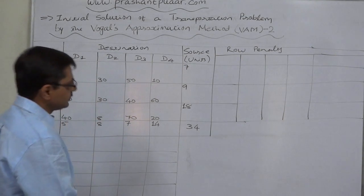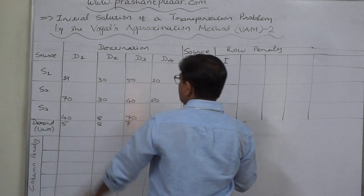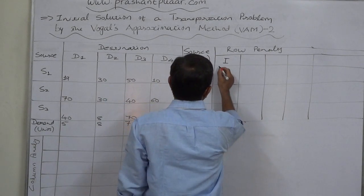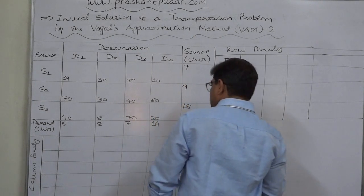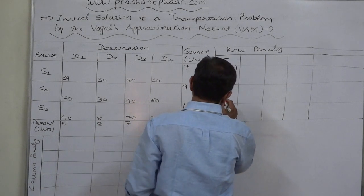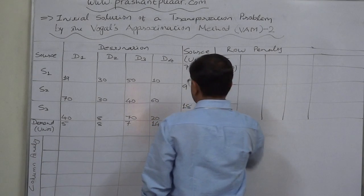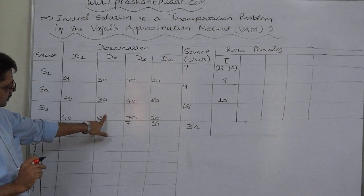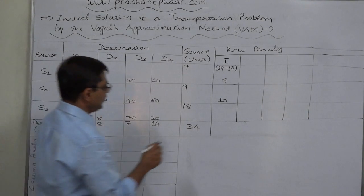Let us start with the first trial. In row S1, the lowest cost is 10 and the immediate higher cost is 19, so the penalty is 19 minus 10 equals 9. In row S2, the lowest cost is 30 and immediate higher is 40, so the penalty is 40 minus 30 equals 10. In row S3, the lowest cost is 8 and immediate higher is 20, so the penalty is 20 minus 8 equals 12.